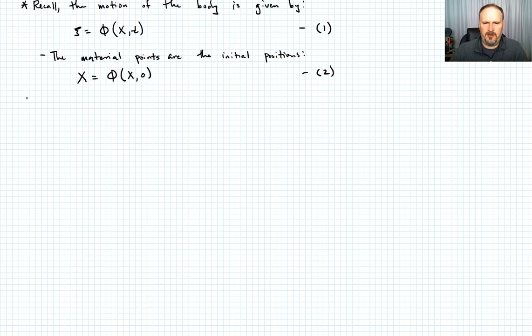How about the displacement? How do we define that? So remember from our previous lecture, it's just the distance between the initial position and the current position. So the displacement is given by u is equal to ξ, the current position, minus the original position, which we could also write as φ of X and t minus X. Call that equation 3.